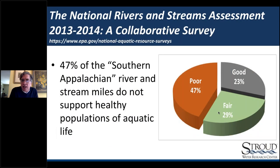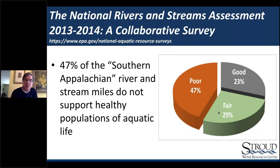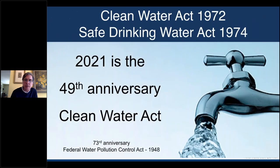These Delaware data match up well with the latest EPA publication — the National Aquatic Resource Survey posted in January. For our area, where the agricultural portions of the Delaware and the Susquehanna would fall, almost 50% of sites were classified as poor — meaning they do not support healthy populations of aquatic life.